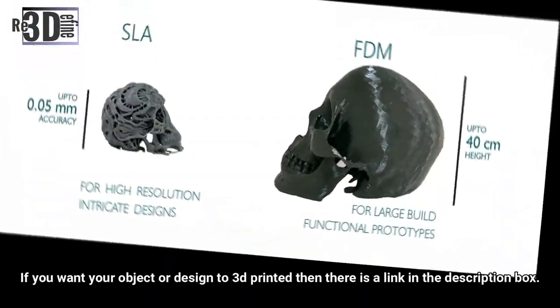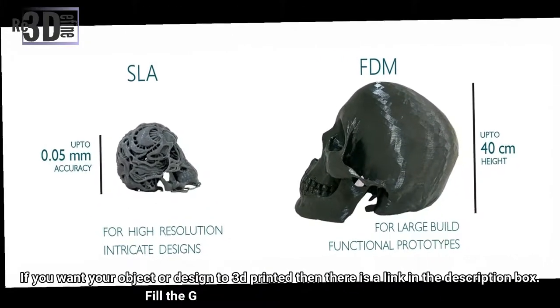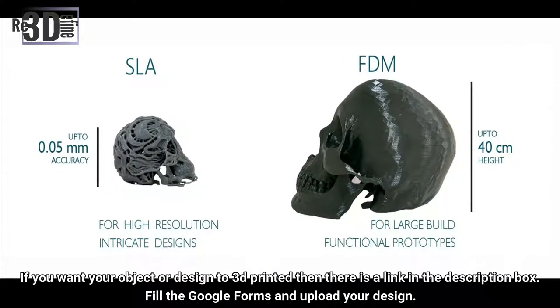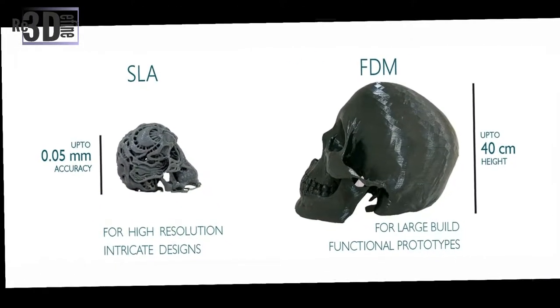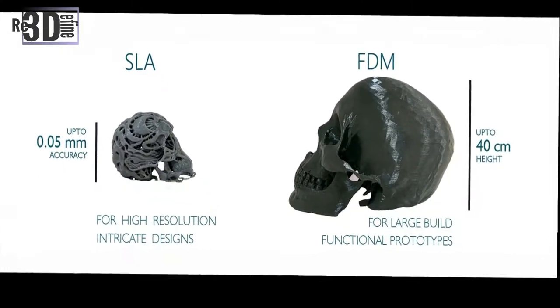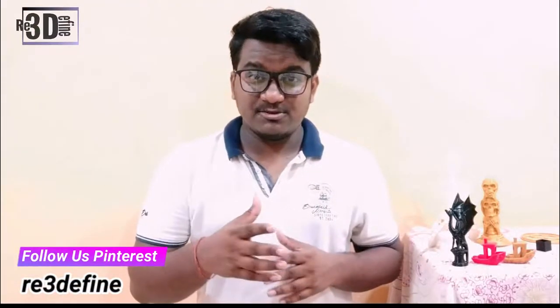Currently, the SLA 3D printer supports layer height of 50 to 100 microns in all resins. Clear, white and customizable resins can achieve Z-Resolution as high as 25 microns. This selection of layer height gives you an ideal balance of speed and resolution.